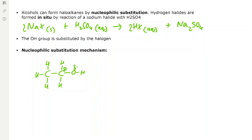The hydrogen halide forms negative chloride ions, which have a lone pair of electrons. The lone pair attacks the delta-positive carbon. We draw a curly arrow from the center of the lone pair to the delta-positive carbon, but since the oxygen is negative you need to avoid it — the electrons go around the other side.